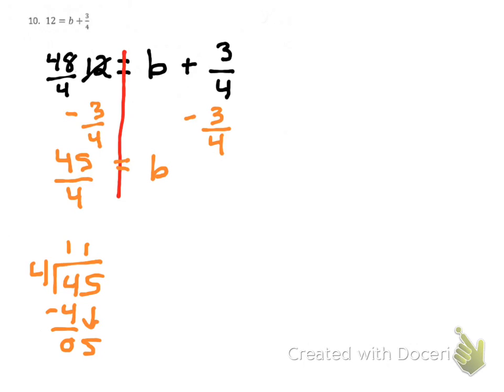Oh, that's a 1 down there, sorry guys. 11 and 1 fourths as our answer. So let's rewrite this over to the side. 11 and 1 fourths equals B.